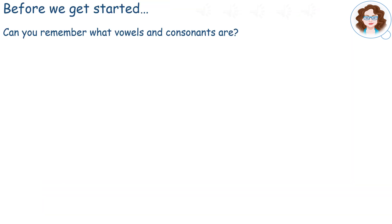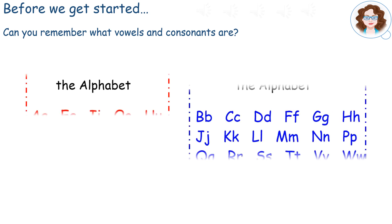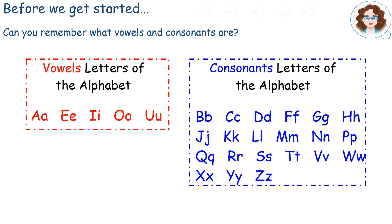Before we get started, can you remember what vowels and consonants are? That's right. Vowels are A, E, I, O and U. We learnt that with that fun song. Consonants are any other letters of the alphabet.